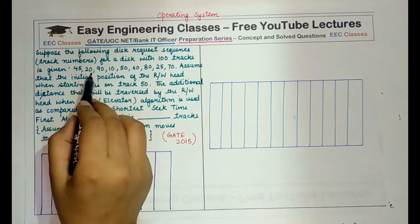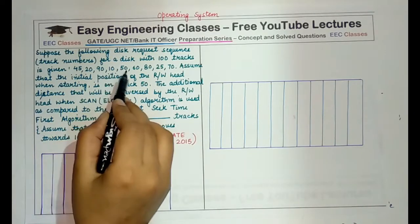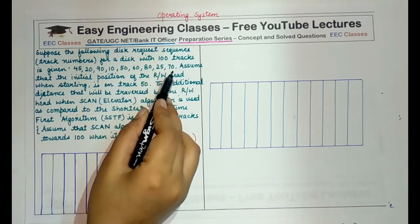The sequence is 45, 20, 90, 10, 50, 60, 80, 25, and 70.